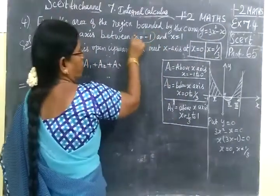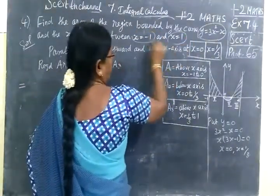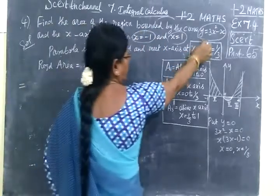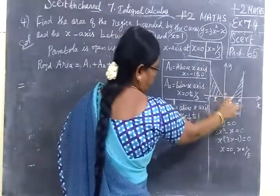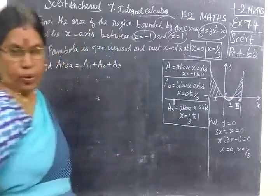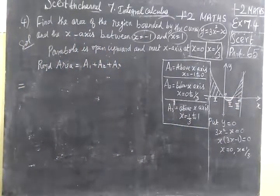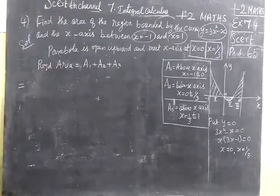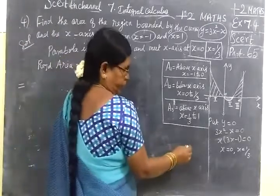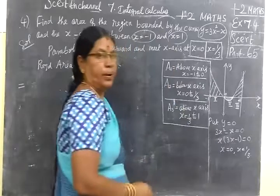The x-intercepts are at x equal to minus 1, x equal to plus 1. The parabola meets the x-axis, and we need to find the area of the region.